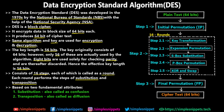DES encrypts data in block sizes of 64 bits. The plain text is 64 bits, and the resulting cipher text is also 64 bits. The same algorithm and key are used for both encryption and decryption, which means this is a symmetric key algorithm. The key length is 56 bits — the key originally consists of 64 bits, but only 56 are used by the algorithm; the other 8 are used for parity and error checking.